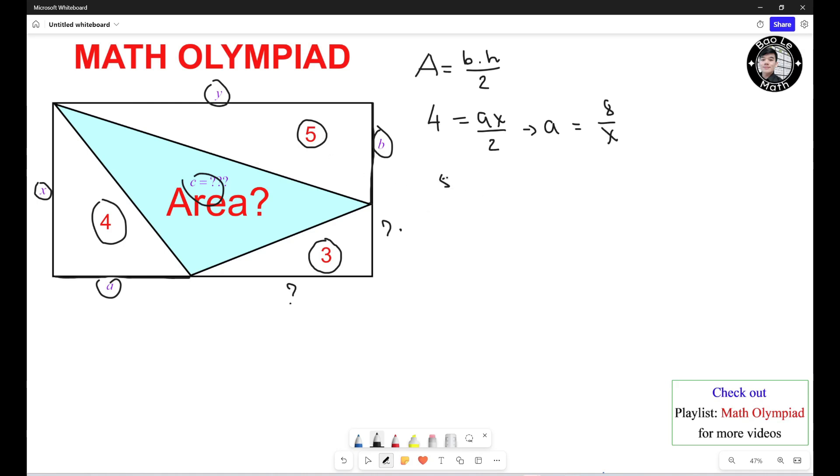This triangle right here, I have 5 equals B times Y divided by 2. And then I need to calculate B in terms of Y. So I have B equals 2 times 5, it could be 10, 10 divided by Y.